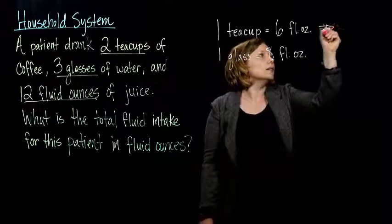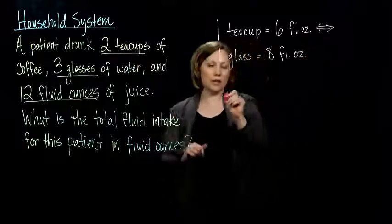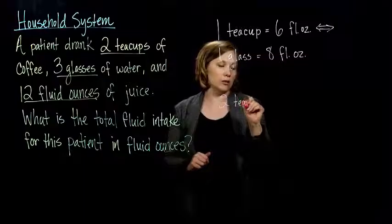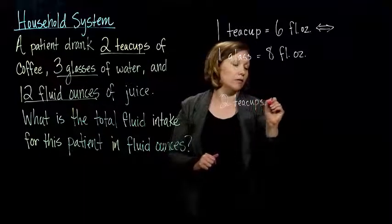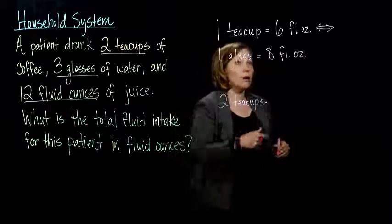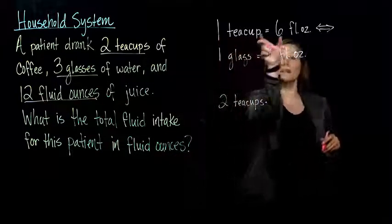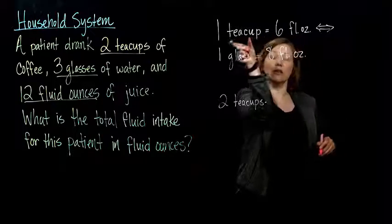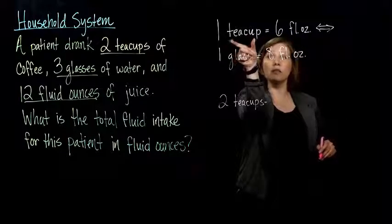So, we have two teacups that we need to make into fluid ounces. So, if I divide on both sides of this equivalence or equation by one teacup,